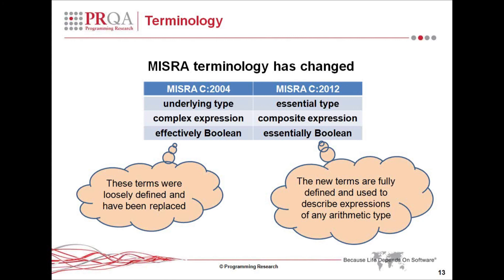The original terms led to some confusion. 'Underlying type' has now been superseded by the term 'essential type'. 'Complex expression' has been superseded by 'composite expression'. 'Effectively boolean' is now superseded by 'essentially boolean'. The new document defines these terms very precisely, and it also extends the definition to the full range of integer types, including things like enums and bit fields.